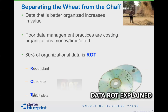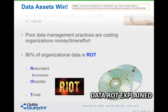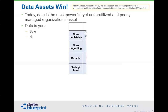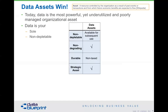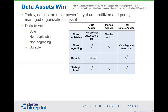My wife corrected me — she said you should call it RIOT: redundant, incomplete, obsolete, or trivial. Data assets are very different. Data is the most powerful yet underutilized, poorly managed organizational asset. It's our only asset that isn't depletable, doesn't degrade, and is enduring in nature — which means if we invest more into it, we will get more out of it. People wear out, buildings degrade — but data, if well managed, gets more valuable.